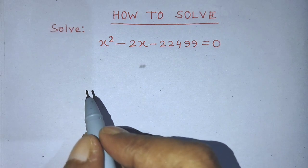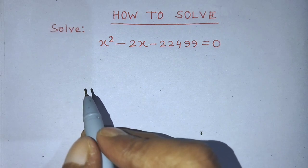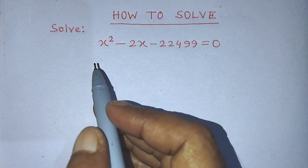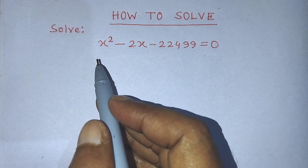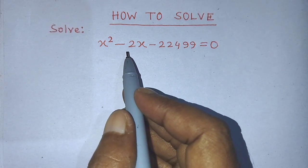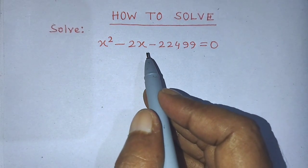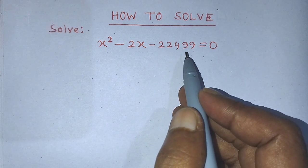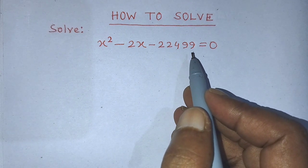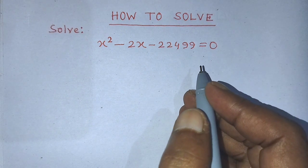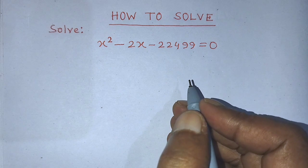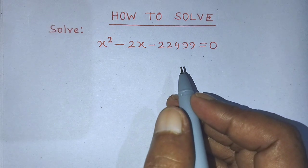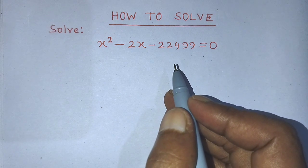Hi guys, welcome back to my channel, Alim Mass Vlog. So students, today our question is: solve for x when x squared minus 2x minus 22,499 is equal to 0. In this video, I will tell you how to solve this quadratic equation.